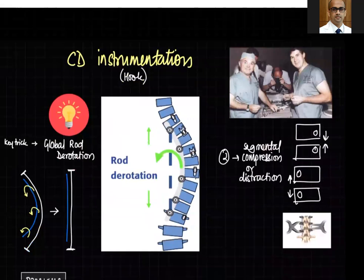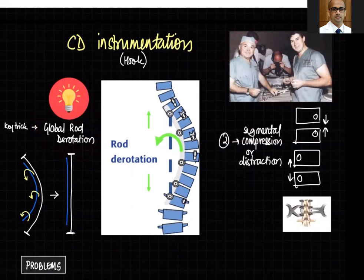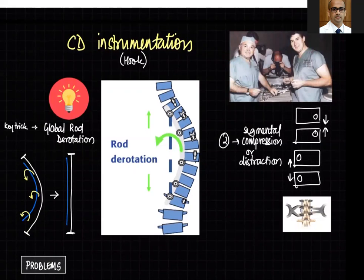The third era was the Cotrel-Dubousset instrumentation era, where anchors were hooks instead of wires. The brilliant idea was the global rod derotation manoeuvre. The story goes that while instrumenting the spine with hooks, the resident suggested placing the rod in the curvature and derotating it so the spine would come into alignment. Essentially, you place the rod in the concavity and rotate it so that once it reaches the sagittal profile, the deformity also corrects.